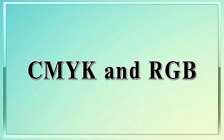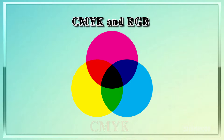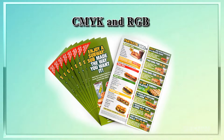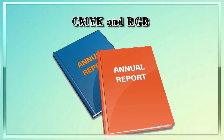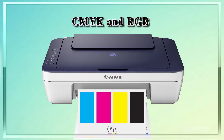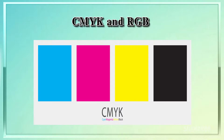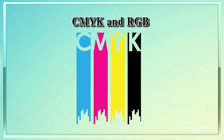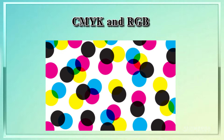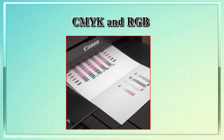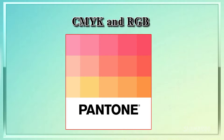CMYK is the standard color mode for sending documents — be they magazines, newspapers, flyers, brochures, annual reports, and so on — to the printers. It stands for cyan, magenta, yellow, and key. Key in this instance means black. It's referred to as key because in four-color printing, cyan, magenta, and yellow printing plates are carefully keyed or aligned with the key of the black key plate. When you send a job to the press, cyan, magenta, yellow, and black plates are made on the traditional press and then aligned to print on paper. You can also add Pantone or fifth colors as separate plates.